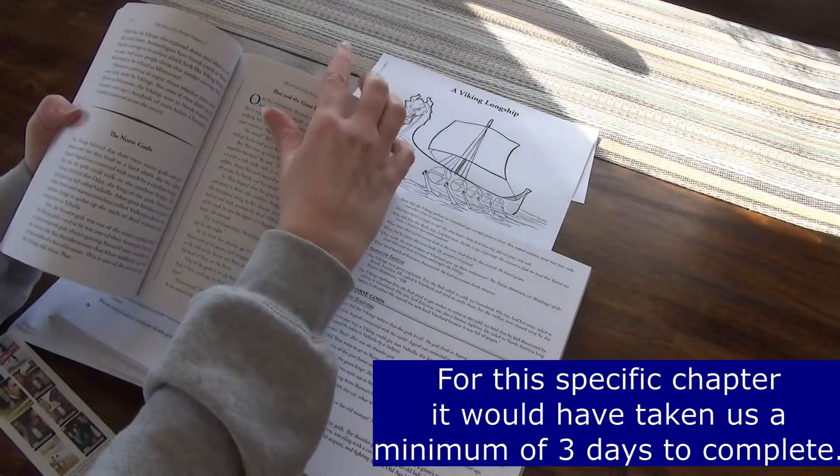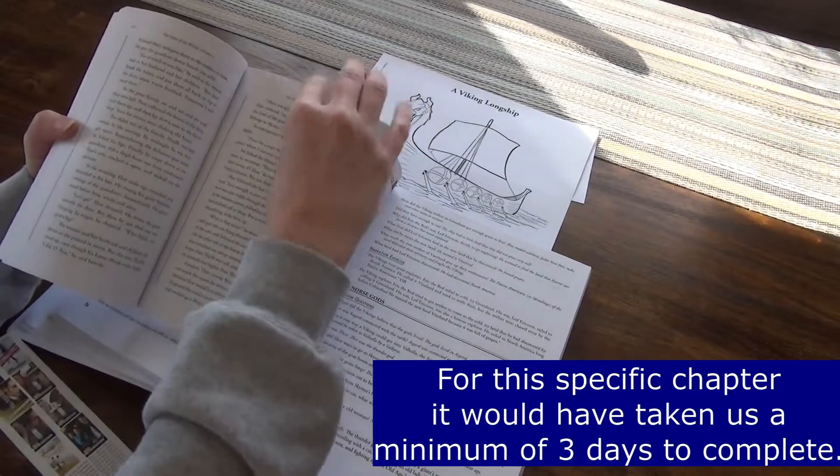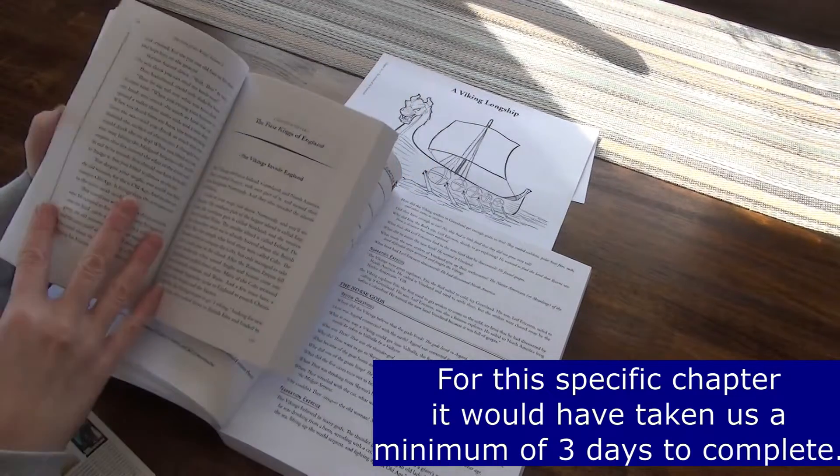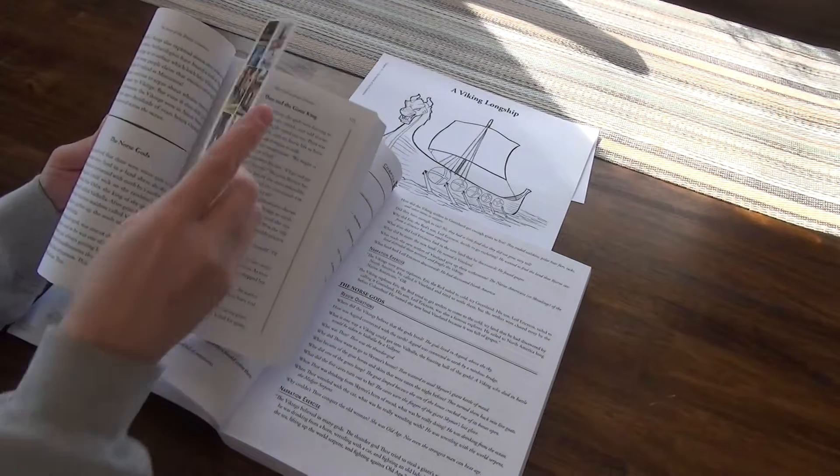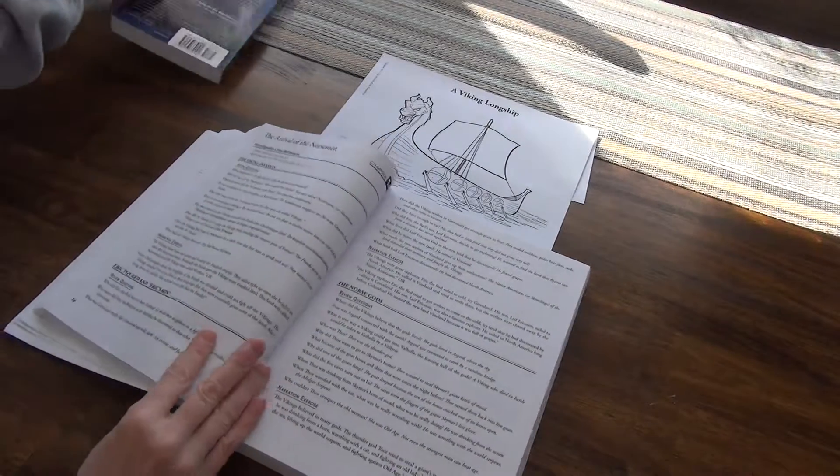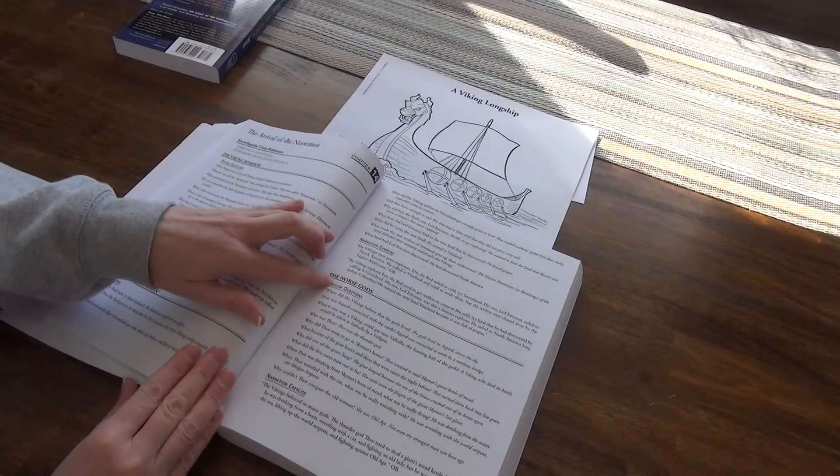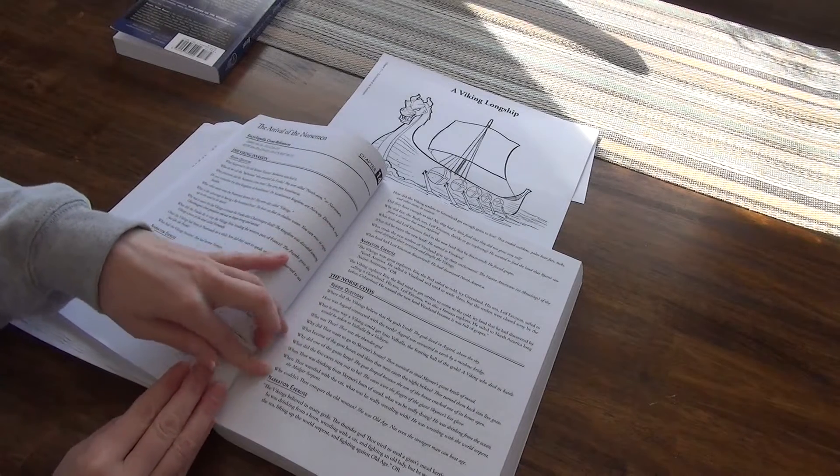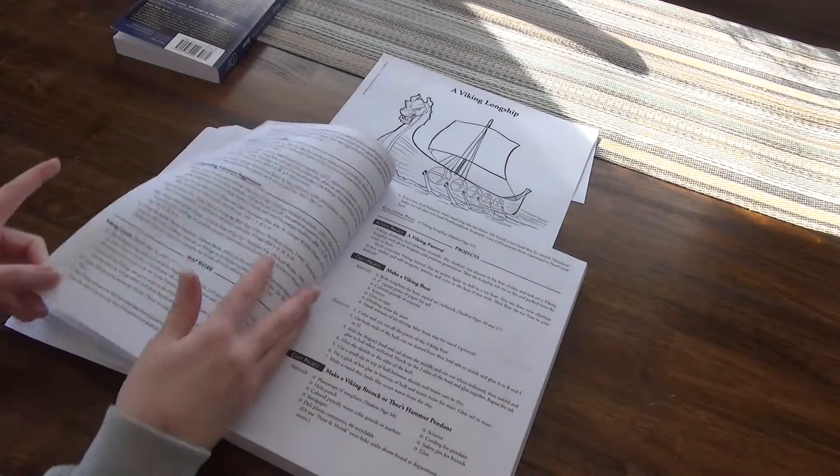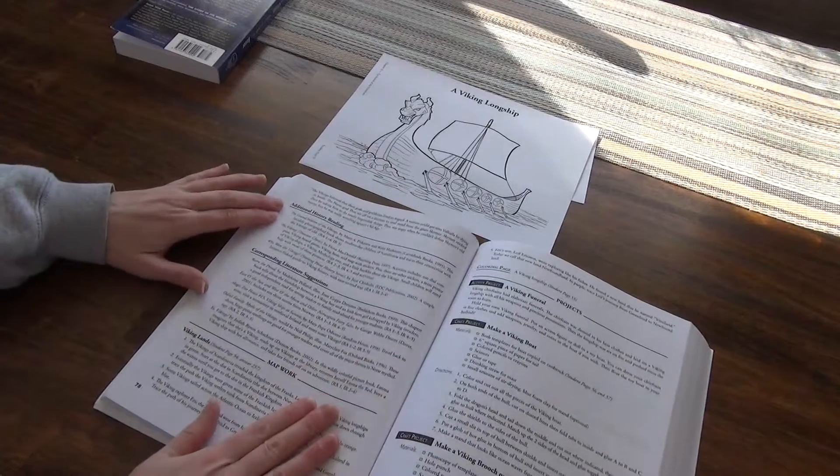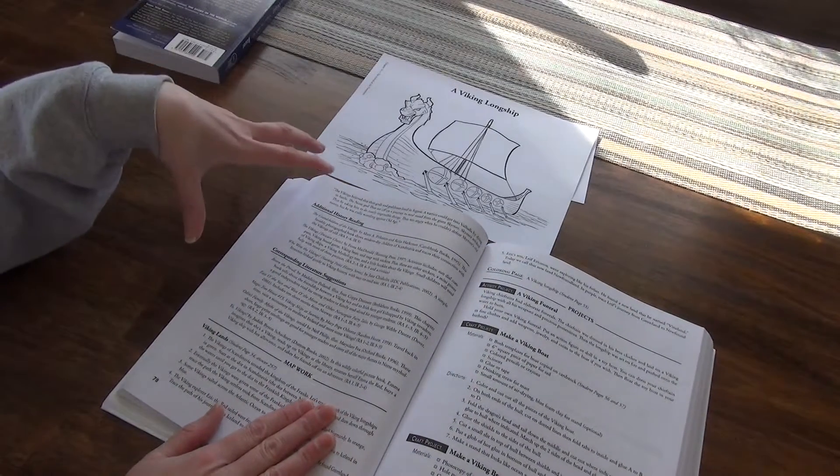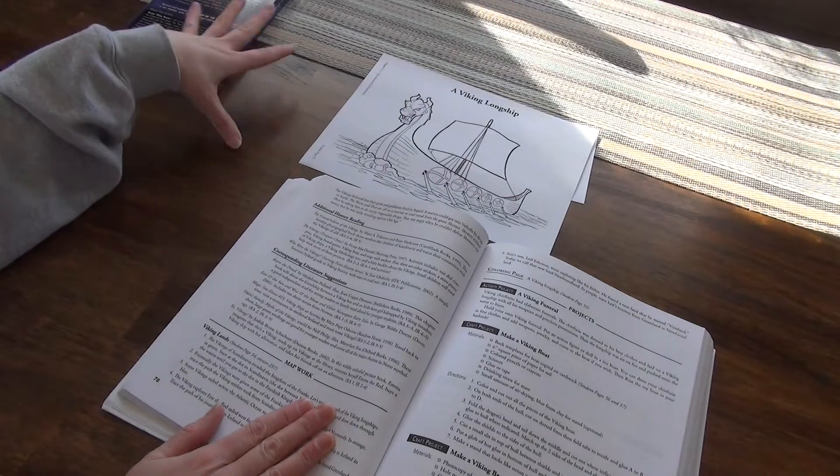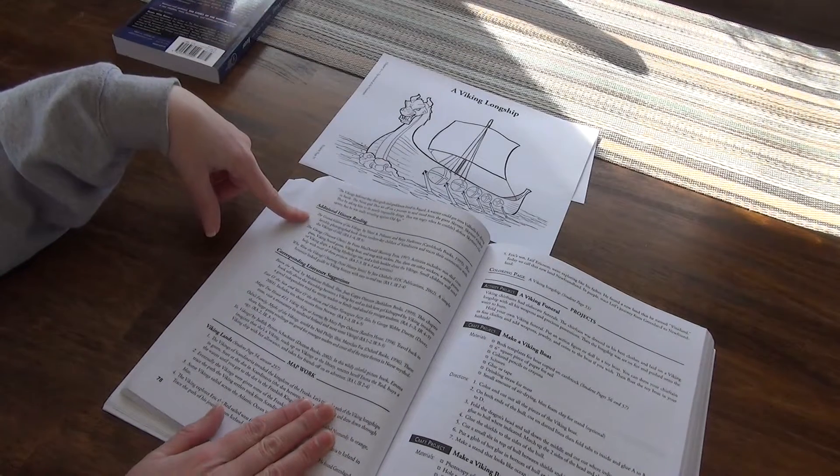Here we have the Norse gods section. And then that would be the end of Chapter 14. When we completed Section 3, we would do the review questions again, the narration exercise, and then we have these additional history readings. Now at the beginning of the book, I think it suggests that you do your sections and then you come and do your additional history.